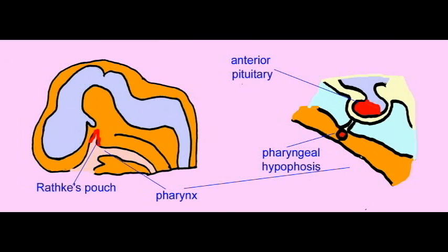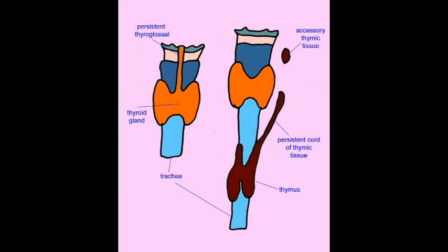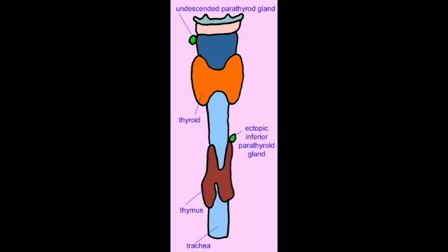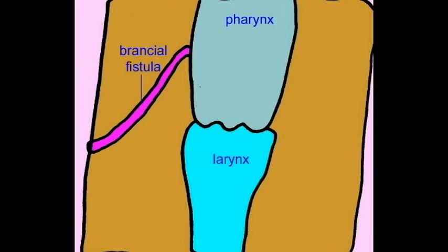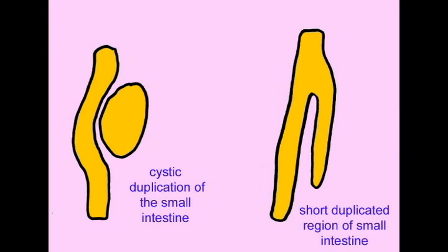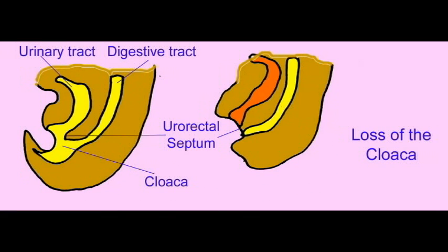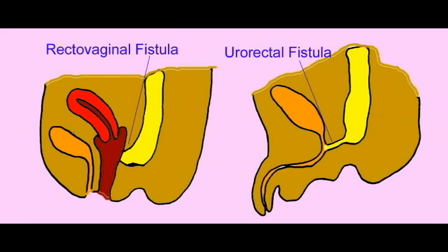Variations in the migration or fusion of endocrine tissues lead to variations in gland structures and positions. Digestive variations include accessory pancreatic tissue, duplicated portions of the intestines, persistence of the cloaca or variation in its division, and varying shapes of specific organs.